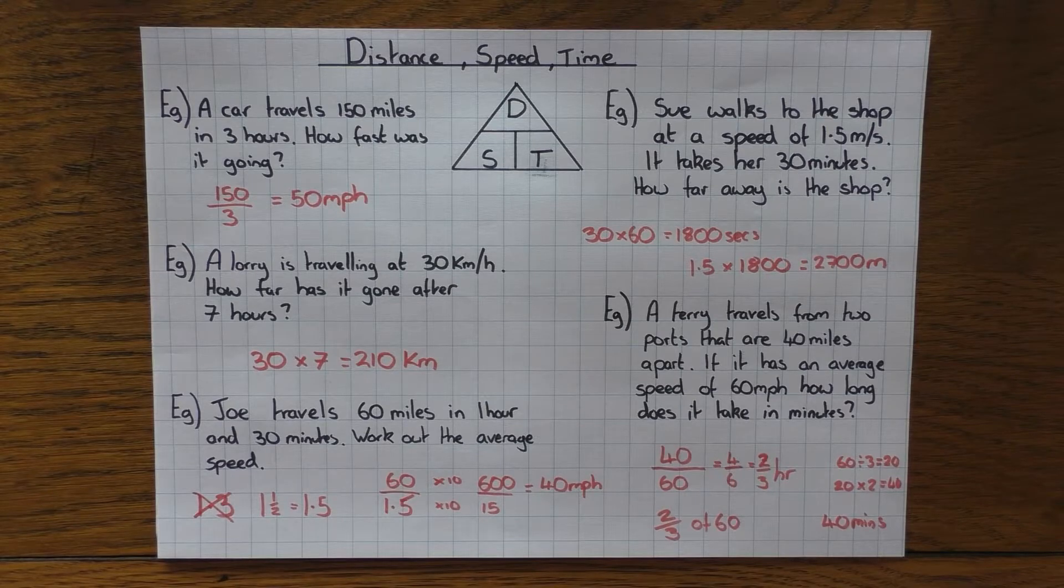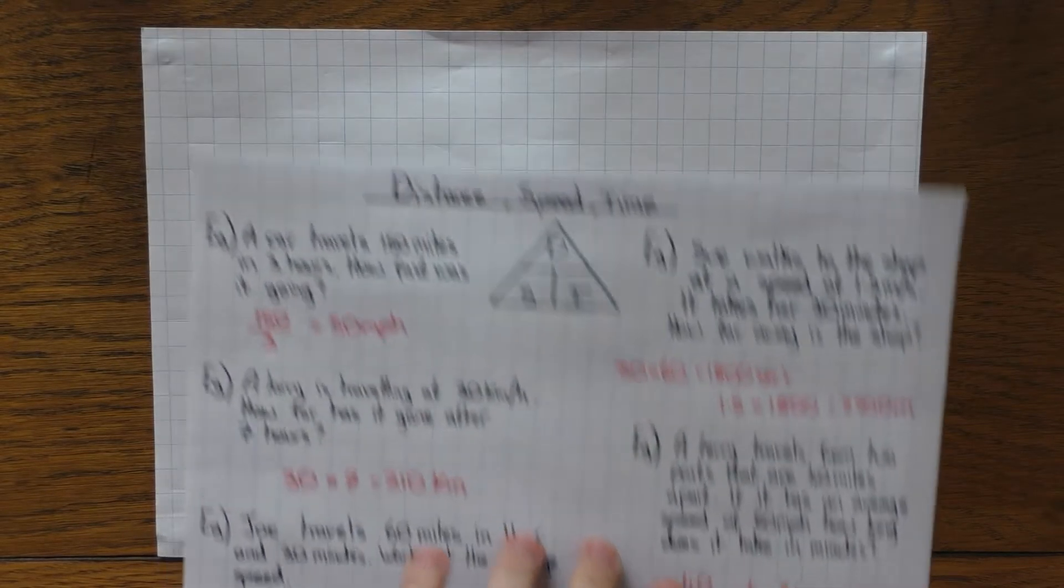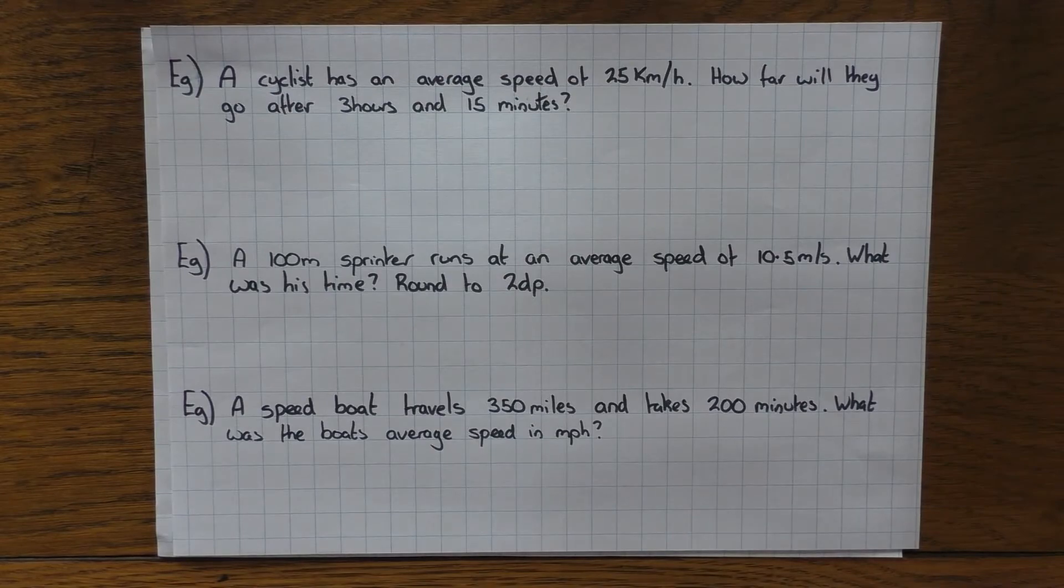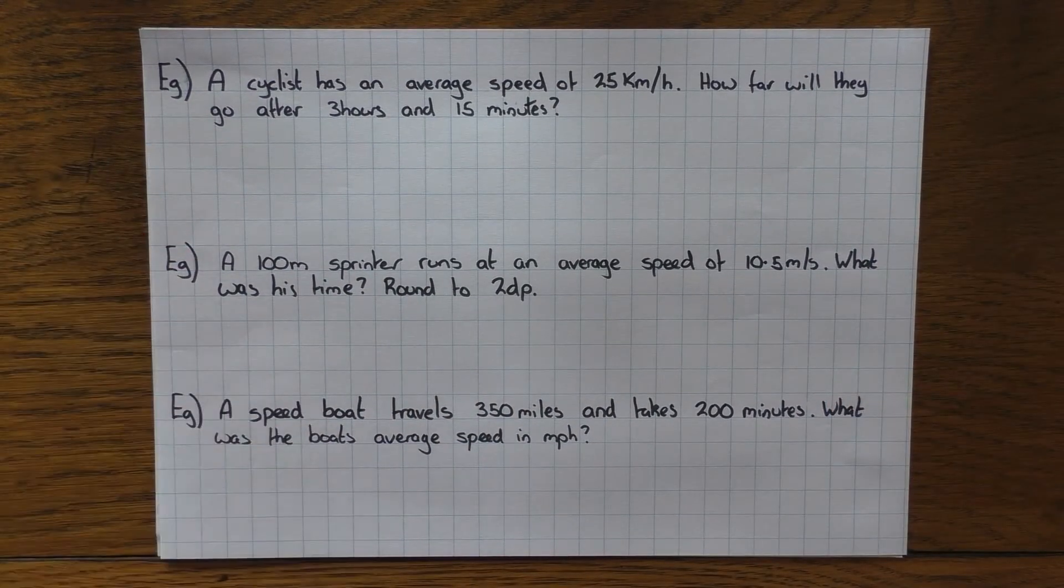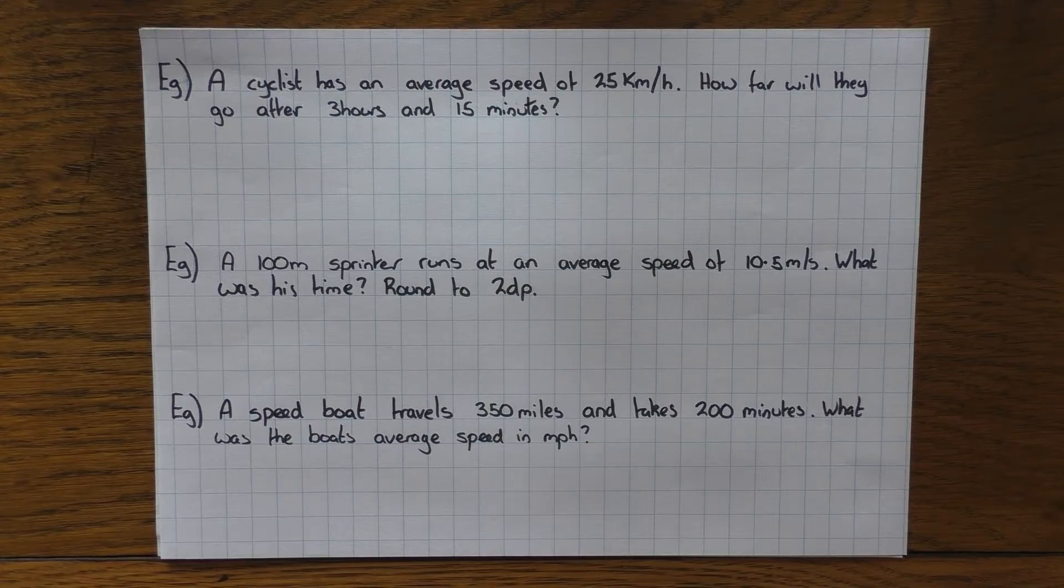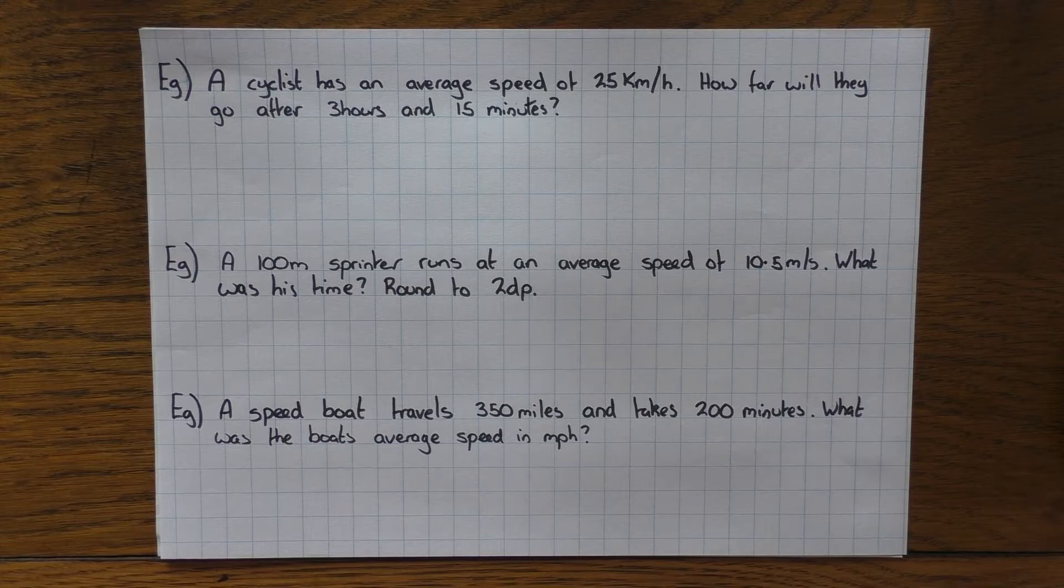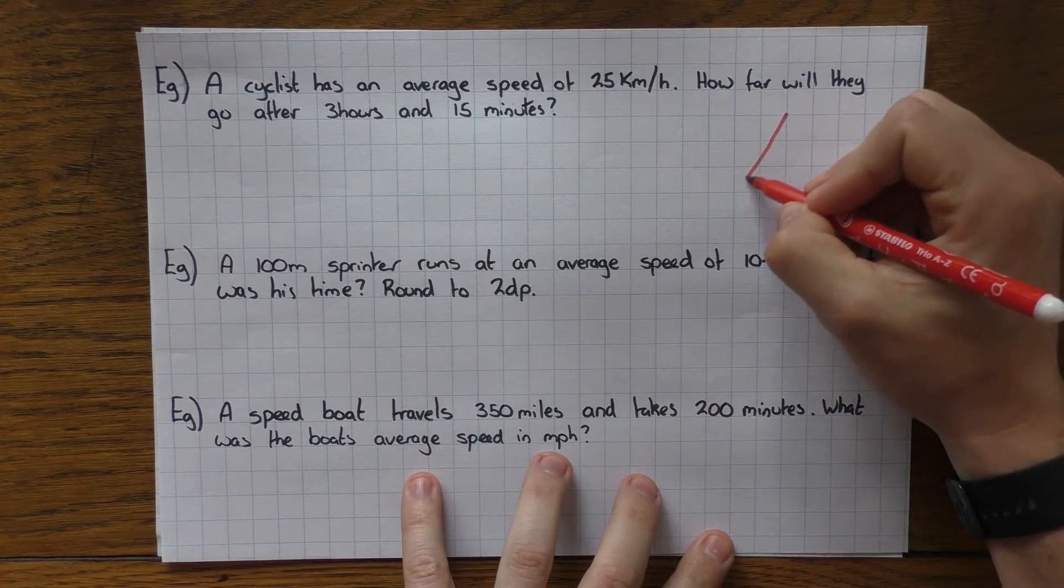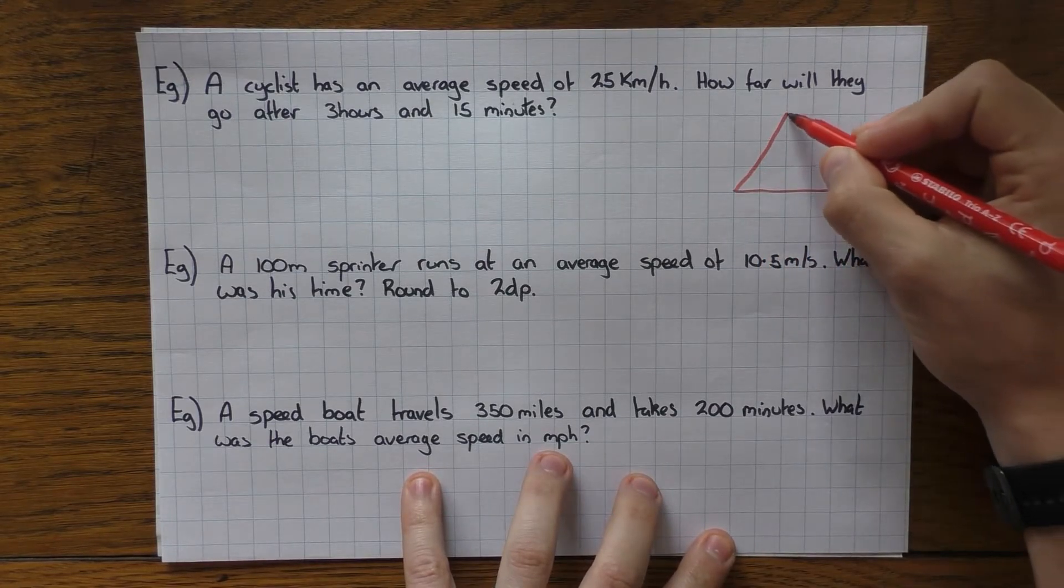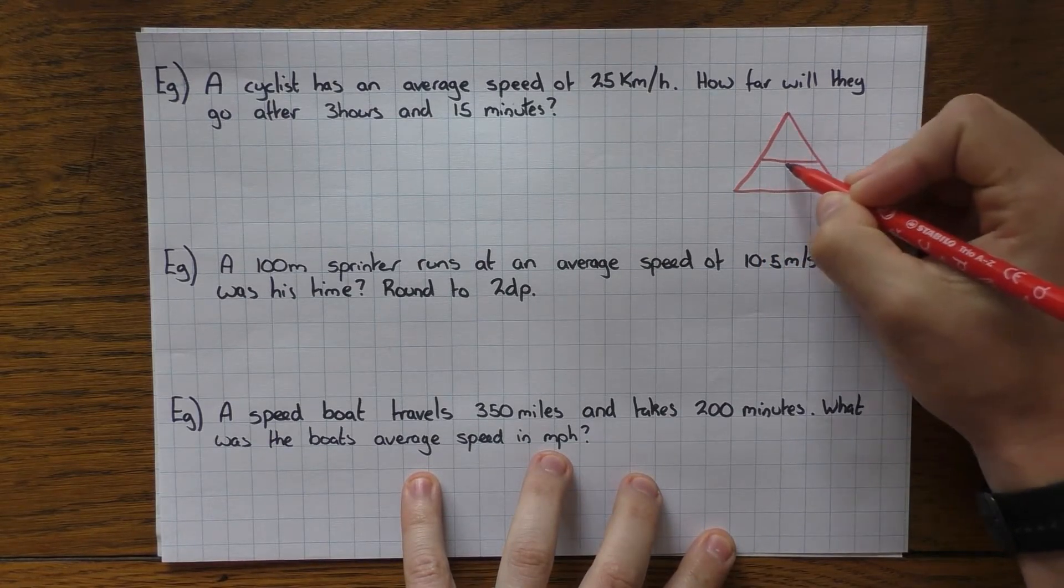So there's some non-calculator questions. Let's have a look at some calculator ones. Here we go. So a cyclist has an average speed of 25 kilometers per hour. How far will they go?